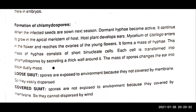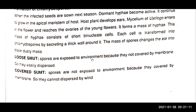Formation of the chlamydospores: when infected seeds are sown next season, dormant hyphae become active. They continue to grow in the apical meristem of the host. The host plant develops its ears. The mycelium of Ustilago enters the flower and reaches the ovaries of young flowers, forming a mass of hyphae consisting of short binucleate cells. These cells transform into chlamydospores by secreting a wall around them. The mass of spores changes the ear into a black dusty mass. Since the spores are not covered by a membrane, they are easily dispersed — this is called loose smut.